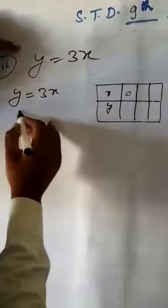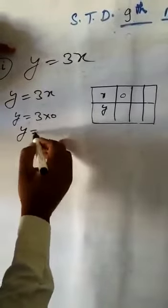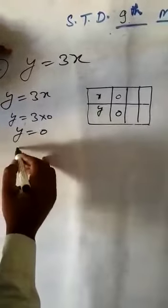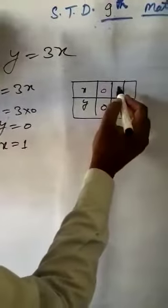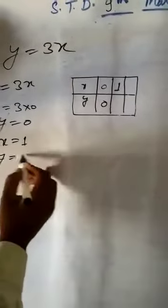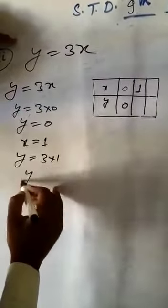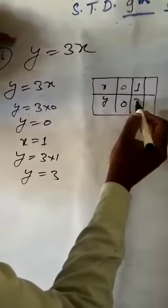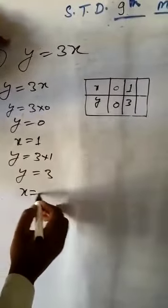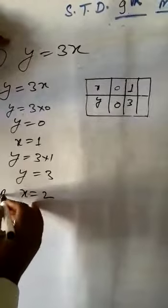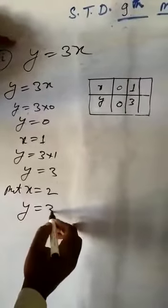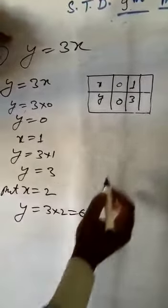Put x equal to 0. y equal to 3x, y equal to 0. Put x equal to 1. y equal to 3x, y equal to 3. Put x equal to 2. y equal to 3x, 3 times 2 equal to 6.